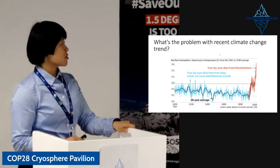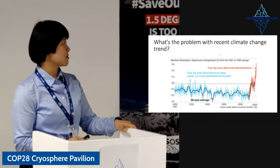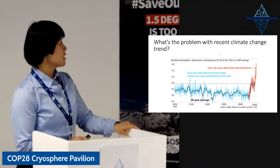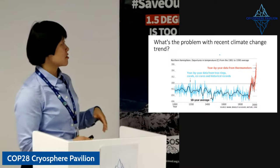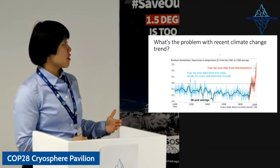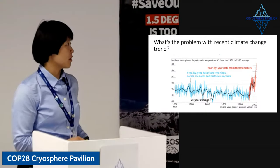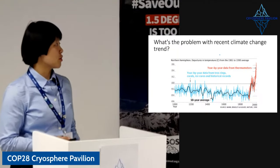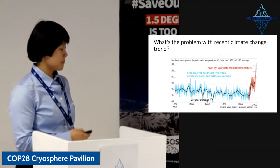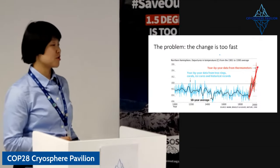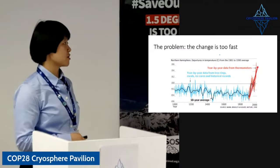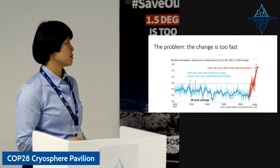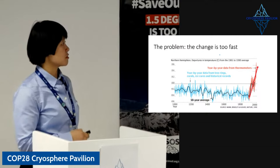This plot shows temperature changes through the last thousand years — famously called the hockey stick plot by Michael Mann et al. It shows temperature changes in the northern hemisphere compared to the average between 1961 to 1990. In the blue curve, temperature changes recorded in natural resources like tree rings, corals, ice cores, and historical records have been quite flat compared to the rate we've been experiencing in the past decades. The problem is that this change has been too fast. Due to human activities, we are accelerating the rate of global temperature warming.